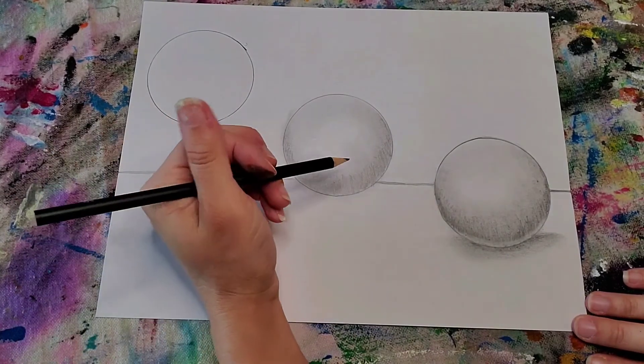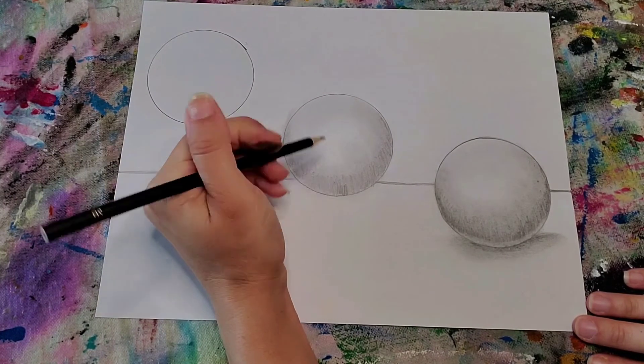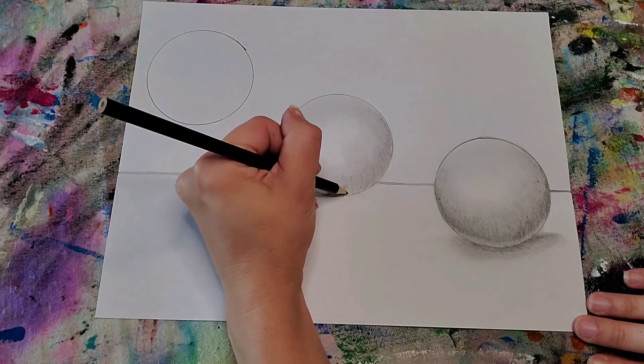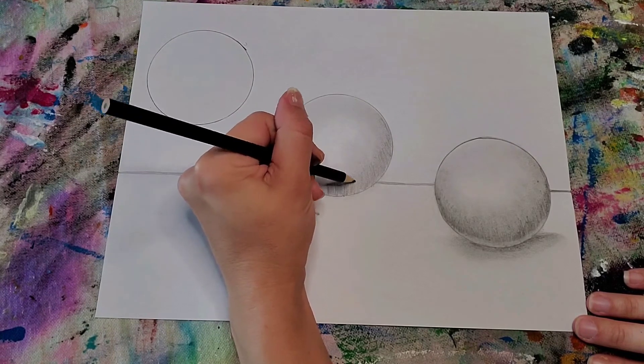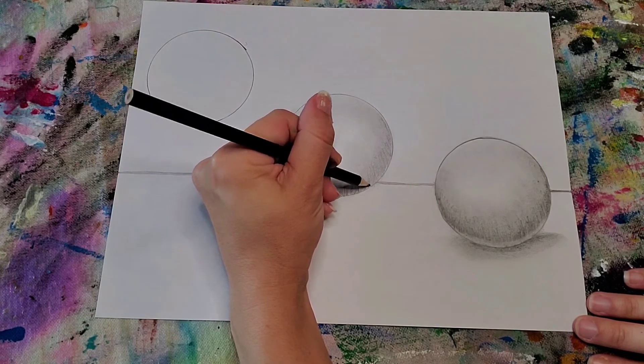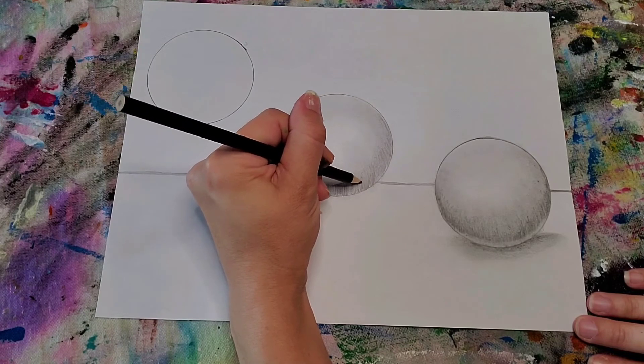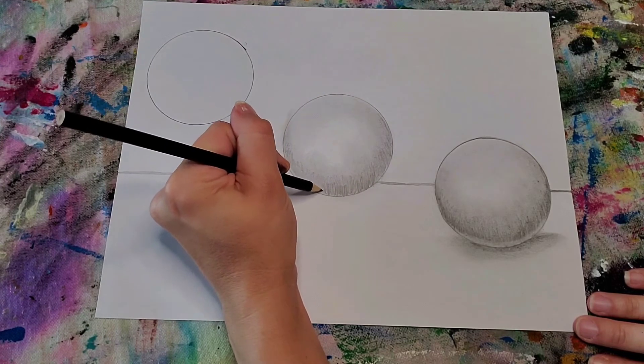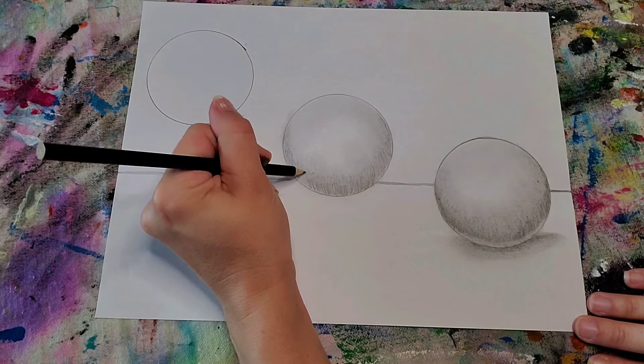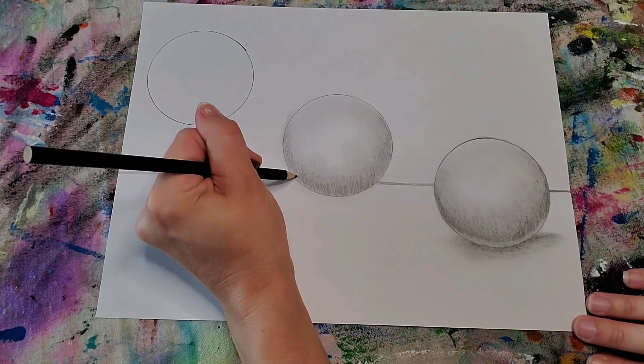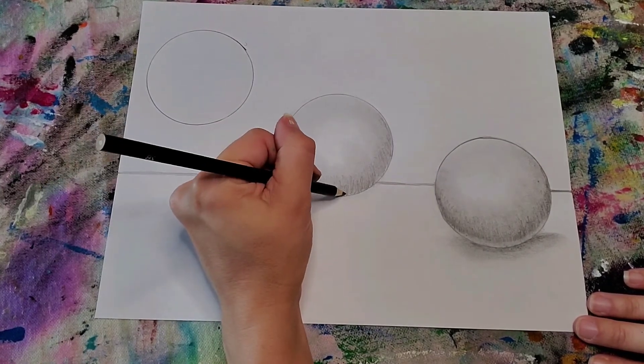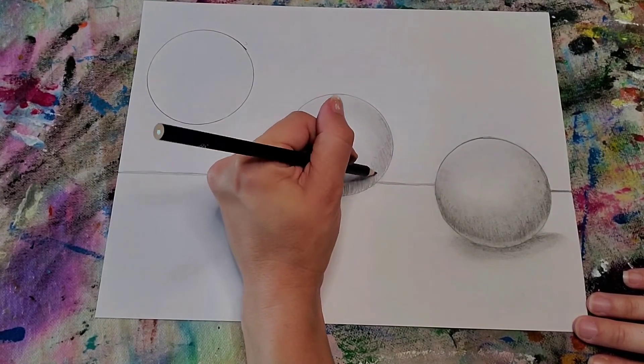I'm going to do it one more time, darkest at the bottom. And remember, I'm not making it a straight line, like straight across. It's kind of jagged, you know, some are higher than others.